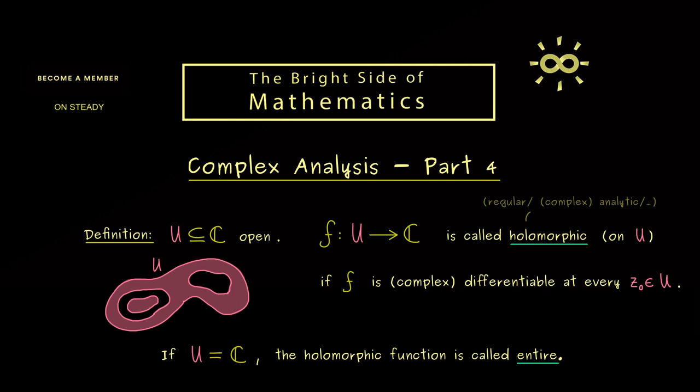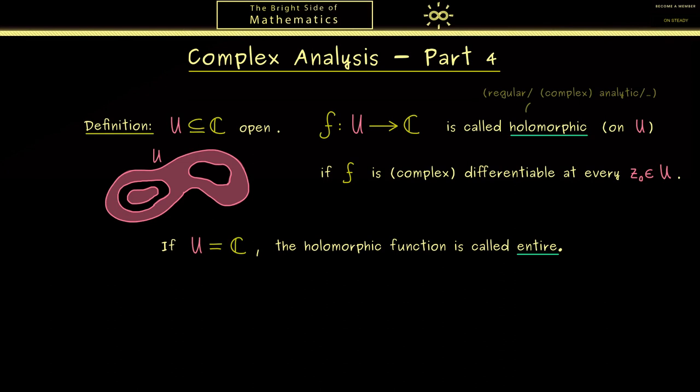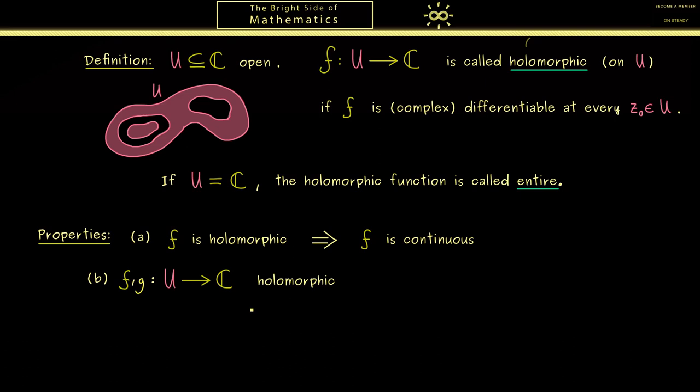By knowing this we can now talk about some basic properties of holomorphic functions. Let's start with the properties we can immediately adapt from the real valued counterparts. First, we know the proof that differentiability implies continuity. Hence in complex analysis this means that a holomorphic function is always a continuous function. Indeed, for showing this fact we can exactly redo the proof we did in real analysis. And this is what we can do for a lot of basic facts here.